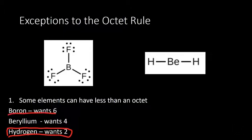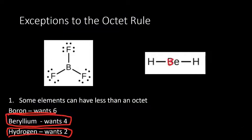Boron turns out to want 6. This is how you'll almost always see boron — with 3 things around it: 3 hydrogens or 3 of the halogens in group 7. It has 6 electrons and it's happy — that's what boron prefers. Beryllium wants 4, and this is almost always how you'll see beryllium, with 4 electrons around it. So some elements want less than an octet. Those are the three important examples: boron wants 6, beryllium wants 4, and hydrogen wants 2.